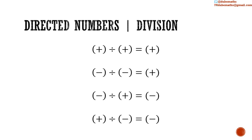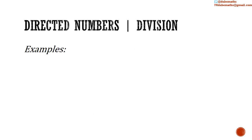To summarize: when dividing two numbers with the same sign, the result is a positive number. And when dividing two numbers with different signs, the result is a negative number. Some examples. Positive 8 divided by positive 2: 8 divided by 2 is equal to 4. A positive divided by a positive is equal to a positive — positive 4.